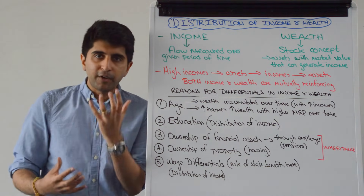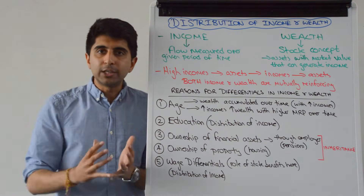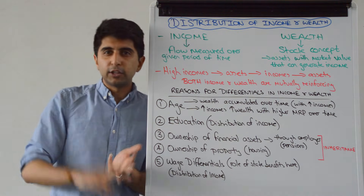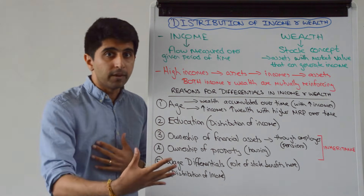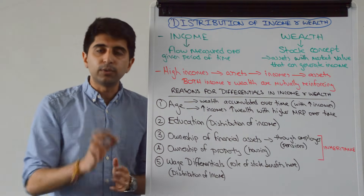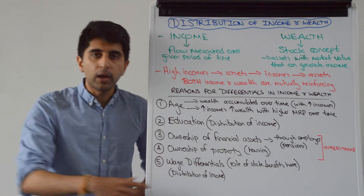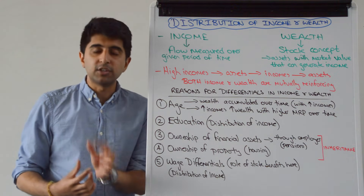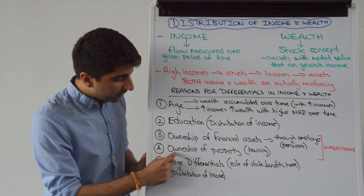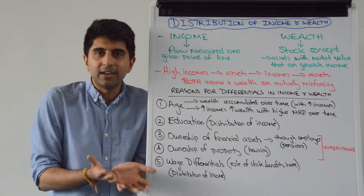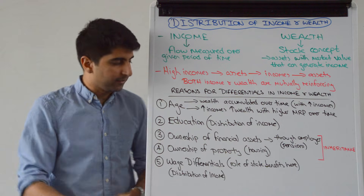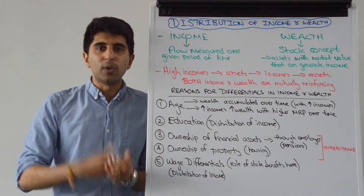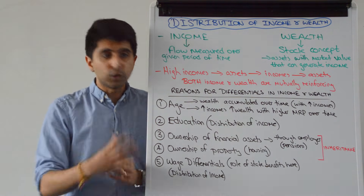Ownership of assets is going to lead to unequal distributions of wealth. Those who are able to purchase financial assets — things like pensions, shares, derivatives, government bonds — are obviously going to be better off than those who don't, leading to an unequal distribution of wealth. The employer also has a role to play: a stronger employer is more likely to give workers access to really good pension schemes. And those who own property — whether to live in or simply as an investment — are going to be extremely wealthy over time as prices rise, creating a big divide compared to those who can't afford property.